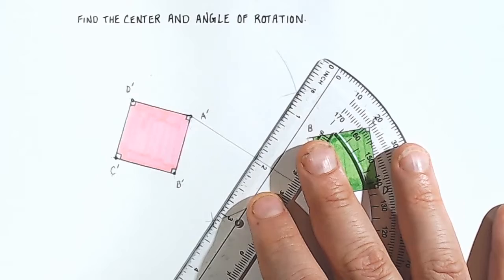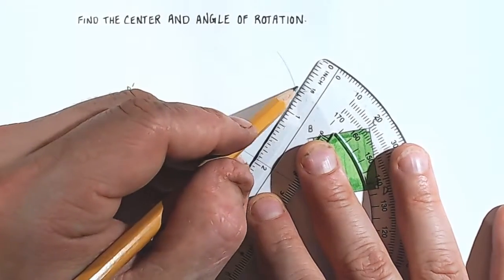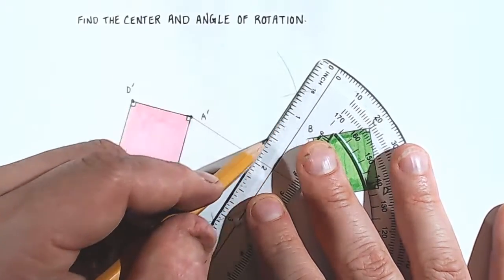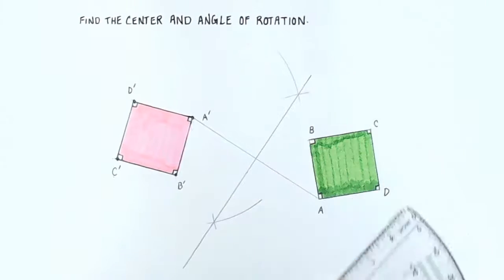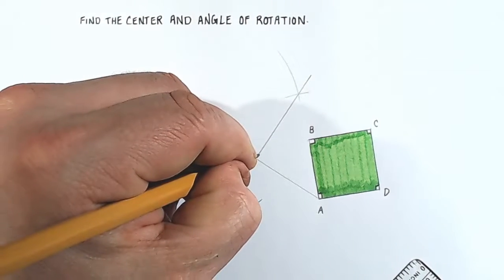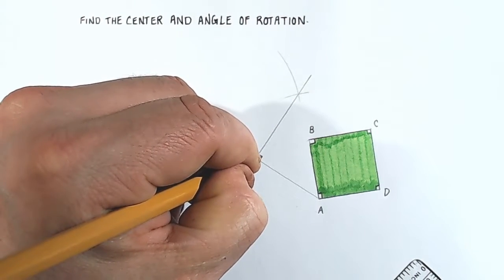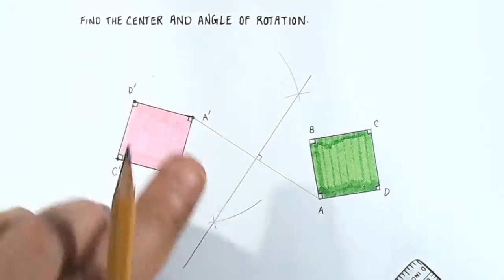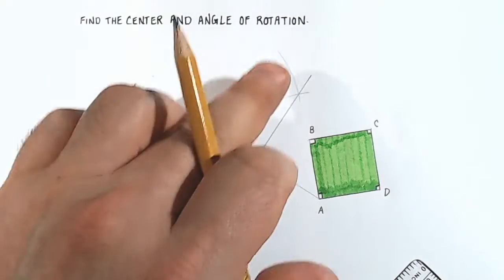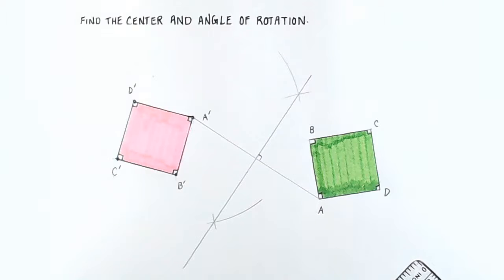So here comes the 90 degree angle, perpendicular bisector. Okay, so we have now constructed a perpendicular bisector from A to A prime, and this line is perpendicular to this line segment here.